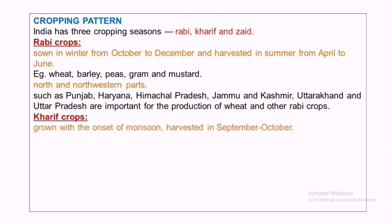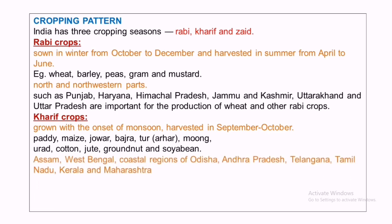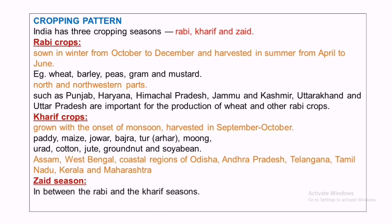Kharif crops are grown with the onset of monsoon and harvested in September. Major crops include paddy, maize, jowar, etc. They are grown in Assam, West Bengal, and coastal regions of Odisha and Andhra Pradesh. In between Rabi and Kharif there is a short interval called the Zaid season. Major crops in this season include watermelon, muskmelon, cucumber, and vegetables.